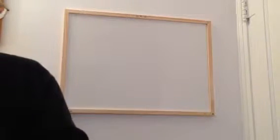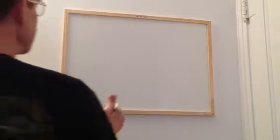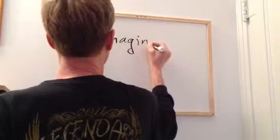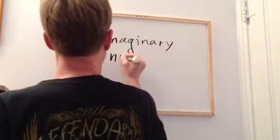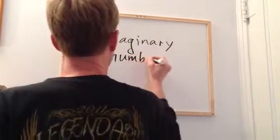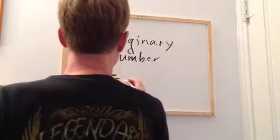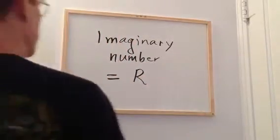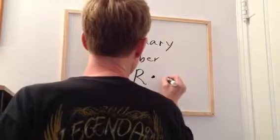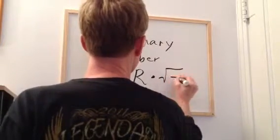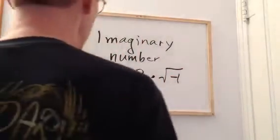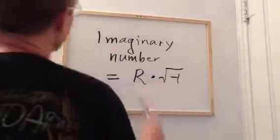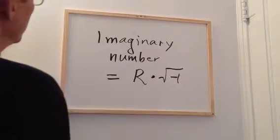So, the short answer, what is an imaginary number? An imaginary number is any real number, which we might represent as R, times the positive square root of minus one. That is the general definition of an imaginary number.